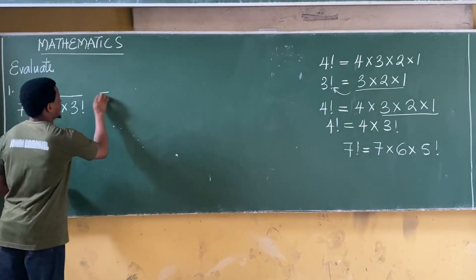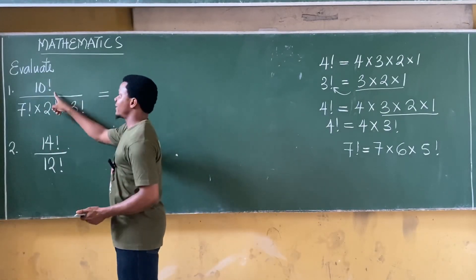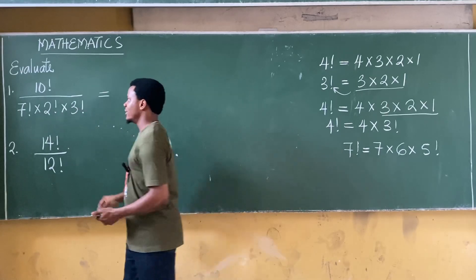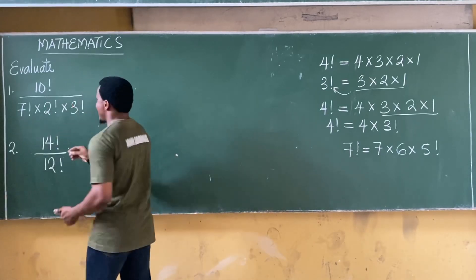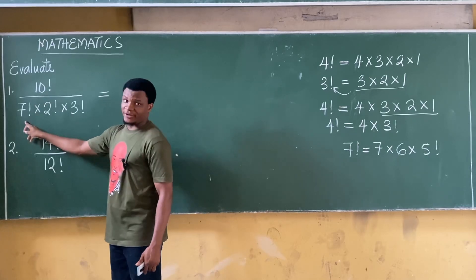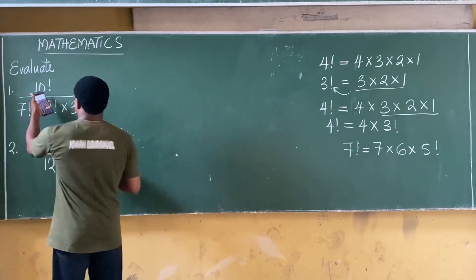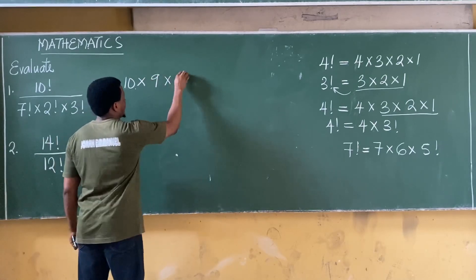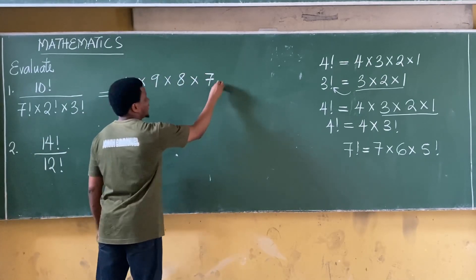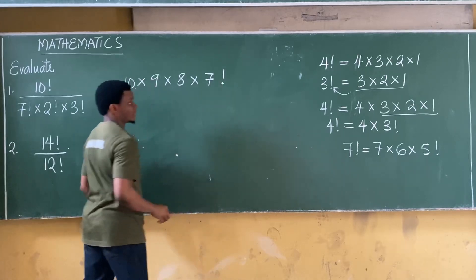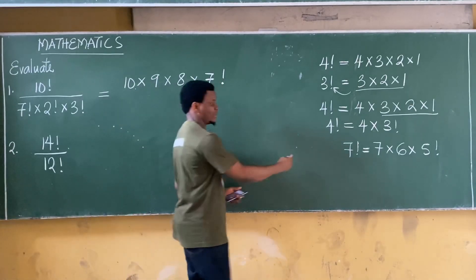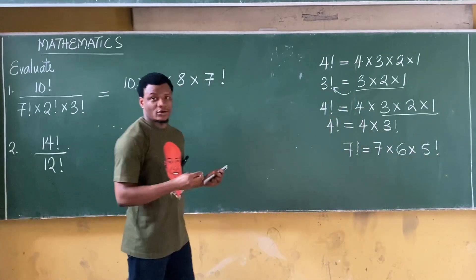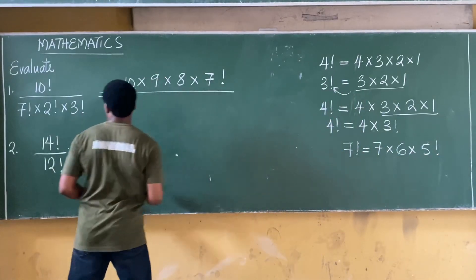So if you have this question: 10 factorial all over 7 factorial times 2 factorial times 3 factorial. This is the same as expressing 10 factorial in terms of 7 factorial. In descending order, 10 factorial becomes 10 times 9 times 8 times 7 — at this point you can put 7 factorial. So in descending order, at any number you stop, you can just add a factorial.